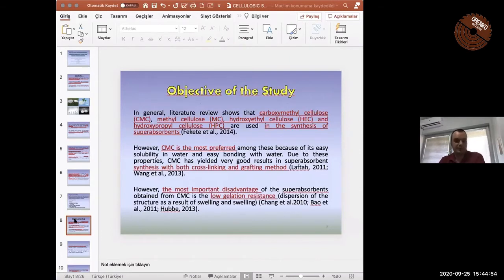Objective of the study. Carboxymethyl cellulose, methyl cellulose, hydroxyethyl cellulose, and hydroxypropyl cellulose are used in the synthesis of the superabsorbents. But carboxymethyl cellulose is the most preferred one because it can be easily dissolved in water and also easy bonding with water. For superabsorbents synthesis from carboxymethyl cellulose, cross-linking and grafting methods are used, but it has a disadvantage, low gelation resistance.